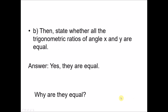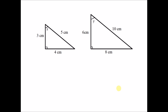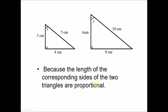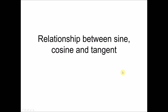Why are they equal? Looking at the two triangles, the corresponding sides are: 3 and 6, 4 and 8, 5 and 10 — each is multiplied by 2, so all sides are proportional. When all sides are proportional and you take the same corresponding angles, the sine, cosine, and tangent will be the same for both triangles.